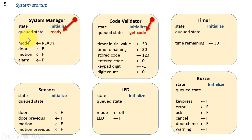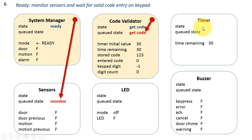In the initialized state, the data path variables are set to the values shown here, and we see that two of the states also enqueue a new state for themselves. The ready state is self-enqueued for the system manager, and the get code state is self-enqueued for the code validator. In the initialized state for the timer, no new state is enqueued, so when we advance time, the timer becomes dormant — as is the buzzer, LED, and sensors process.